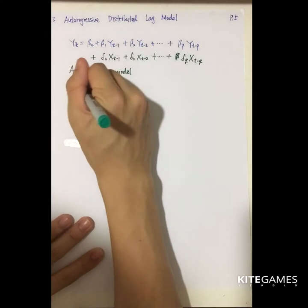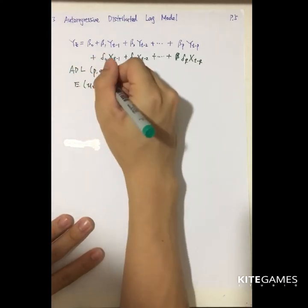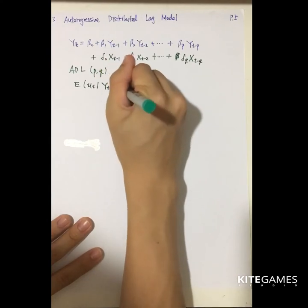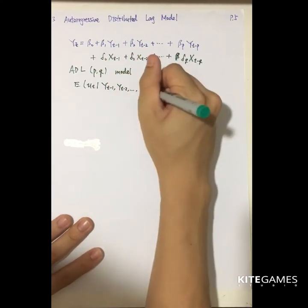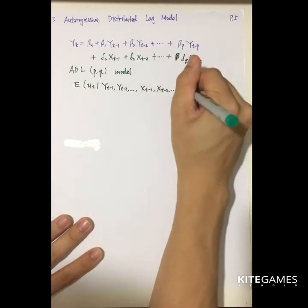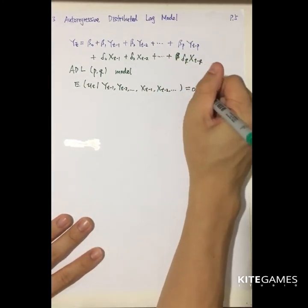And we have the assumptions that the eut given all the yt minus 1, yt minus 2, xt minus 1, xt minus 2, up to all the x and y are equal to 0.